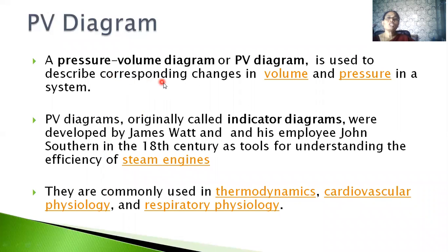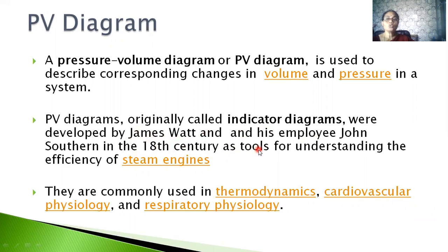A pressure-volume diagram or PV diagram is used to describe the corresponding changes in volume and pressure of a system. These PV diagrams, originally called indicator diagrams, were developed by James Watt and his employee John Southern in the 18th century as tools for understanding the efficiency of steam engines. They are also used in thermodynamics, cardiovascular physiology, and respiratory physiology.